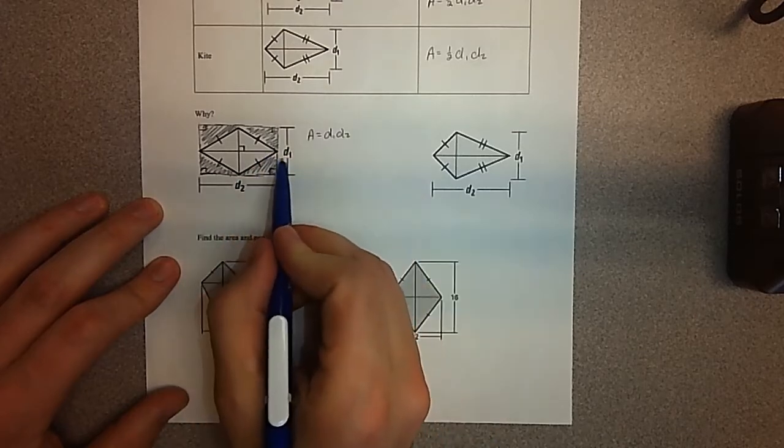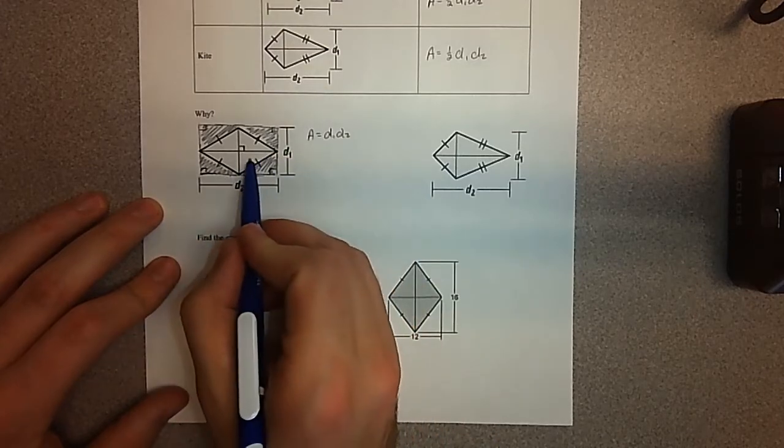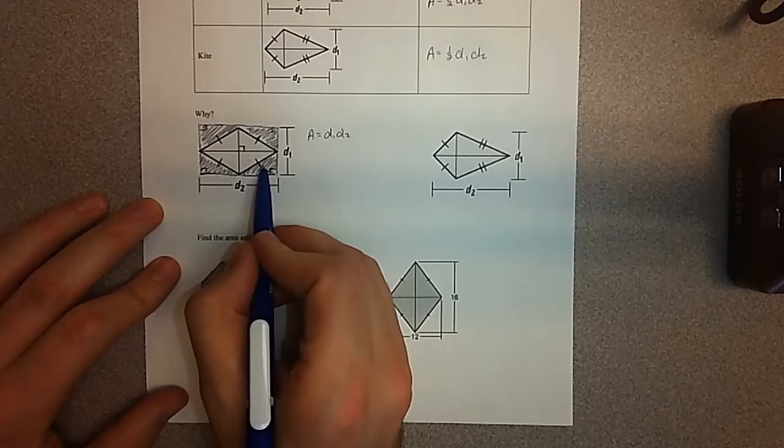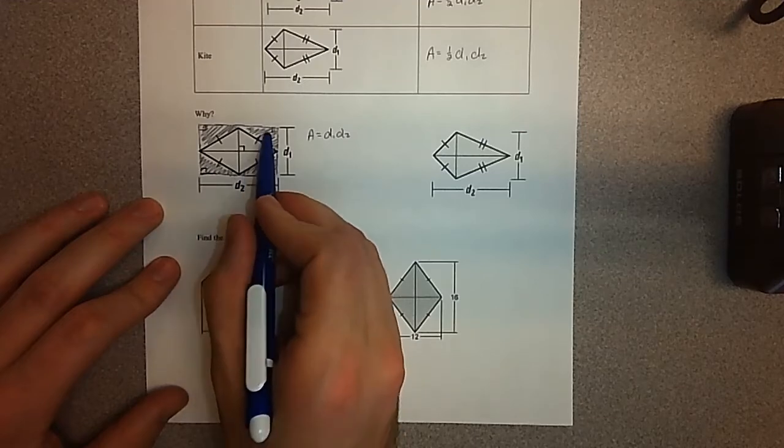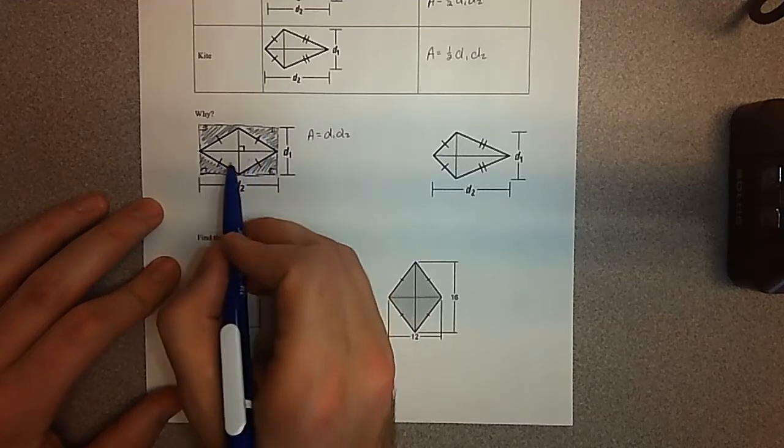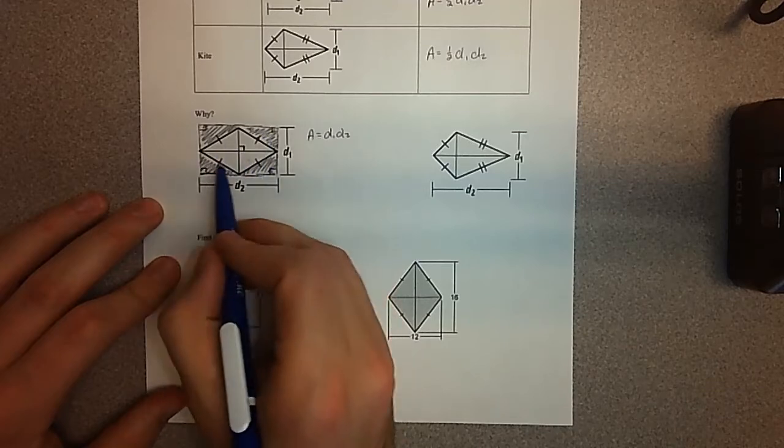And through maybe some triangle congruence proofs, we could prove that this triangle that I'm pointing out right here is congruent to this one, this one's going to that one, that one's going to that one, that one to that one. So basically, what I'm doing is four that I'm keeping, four that I'm cutting off.